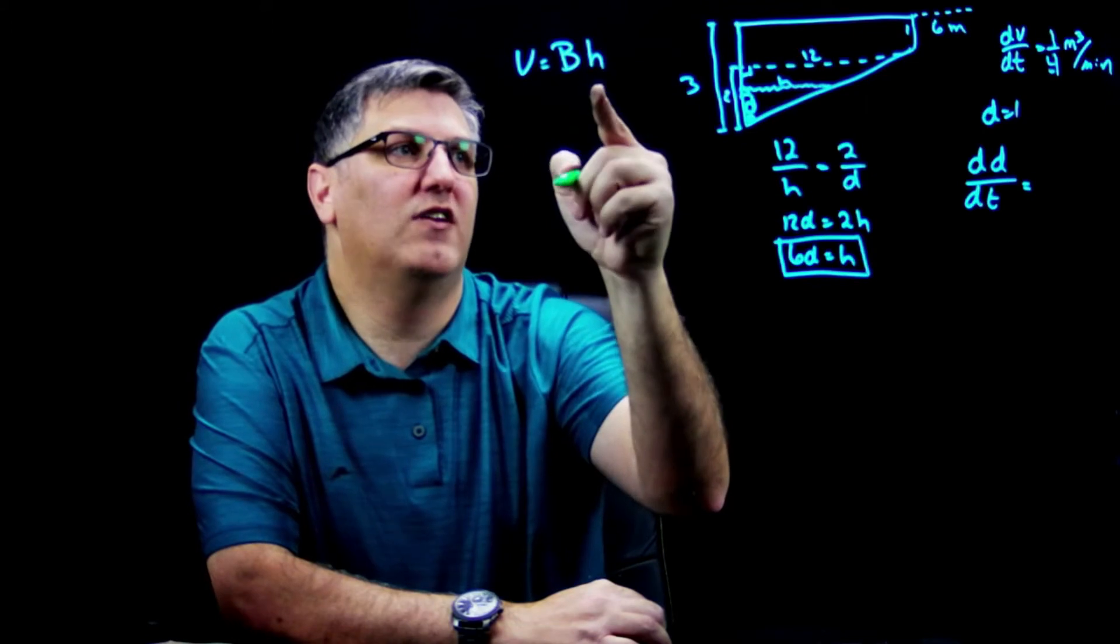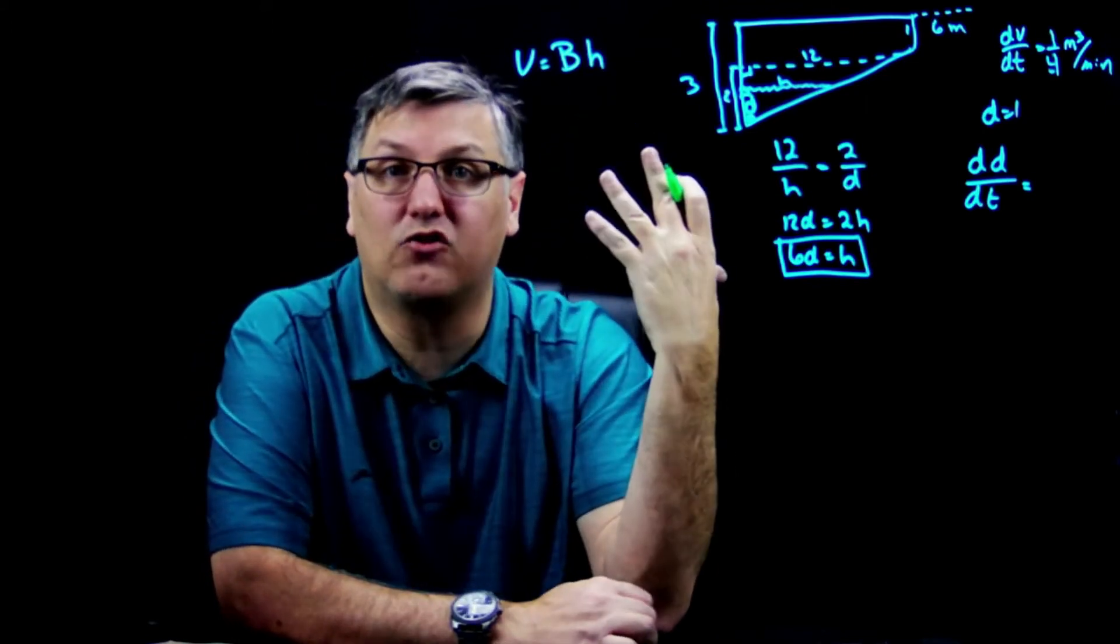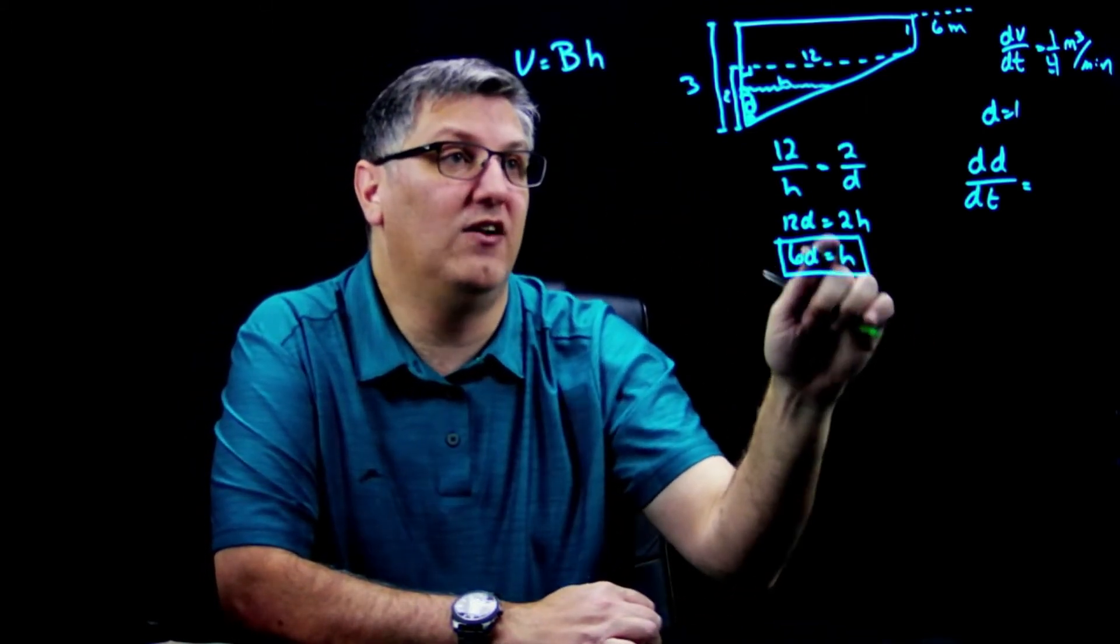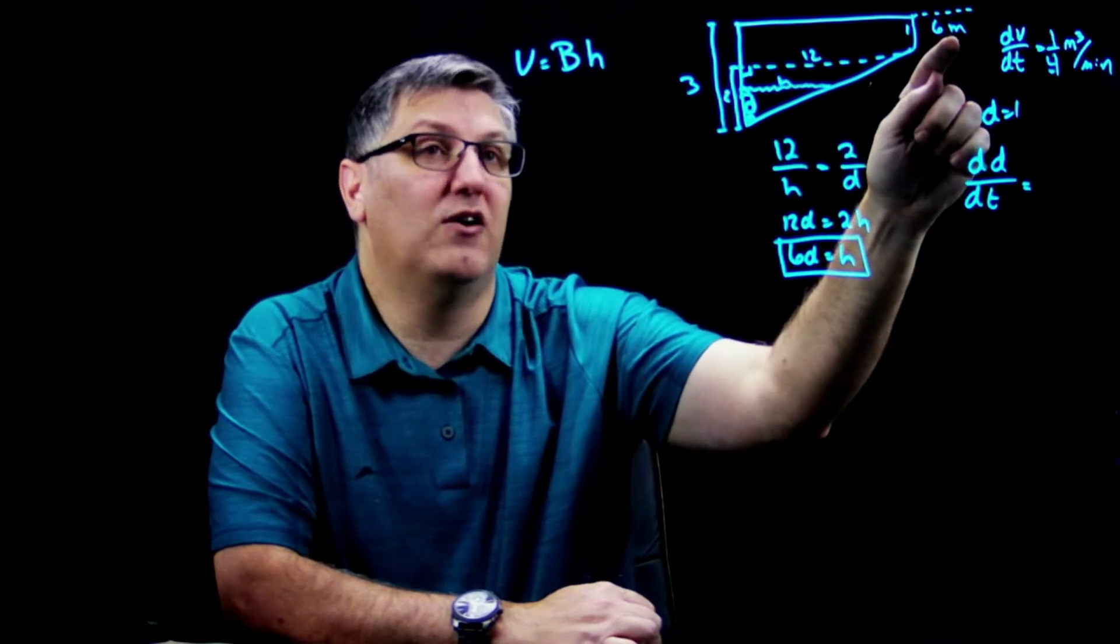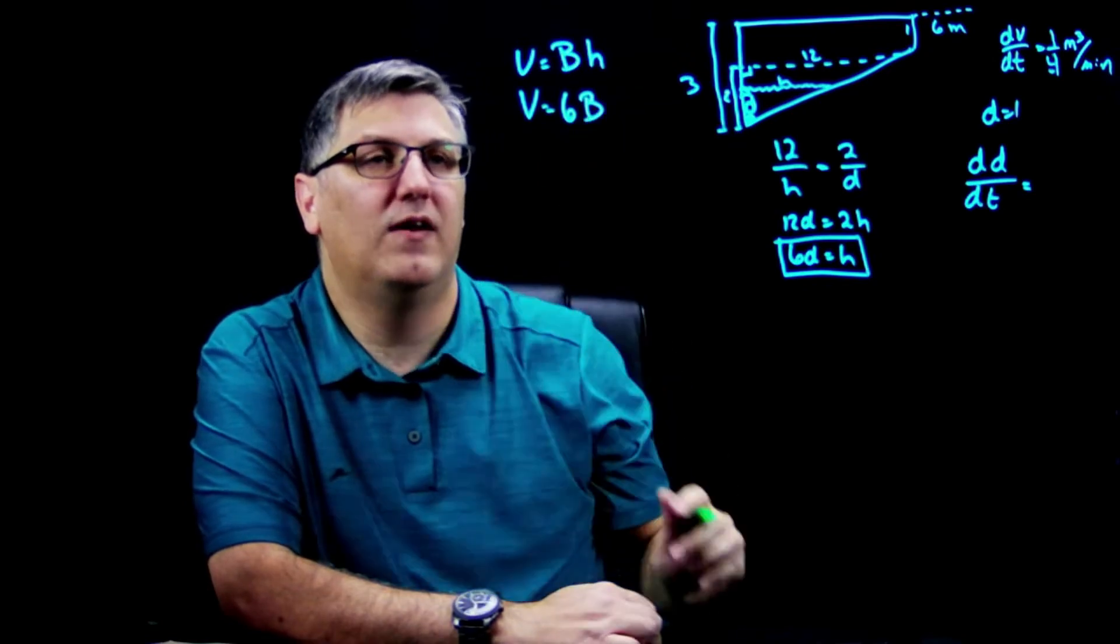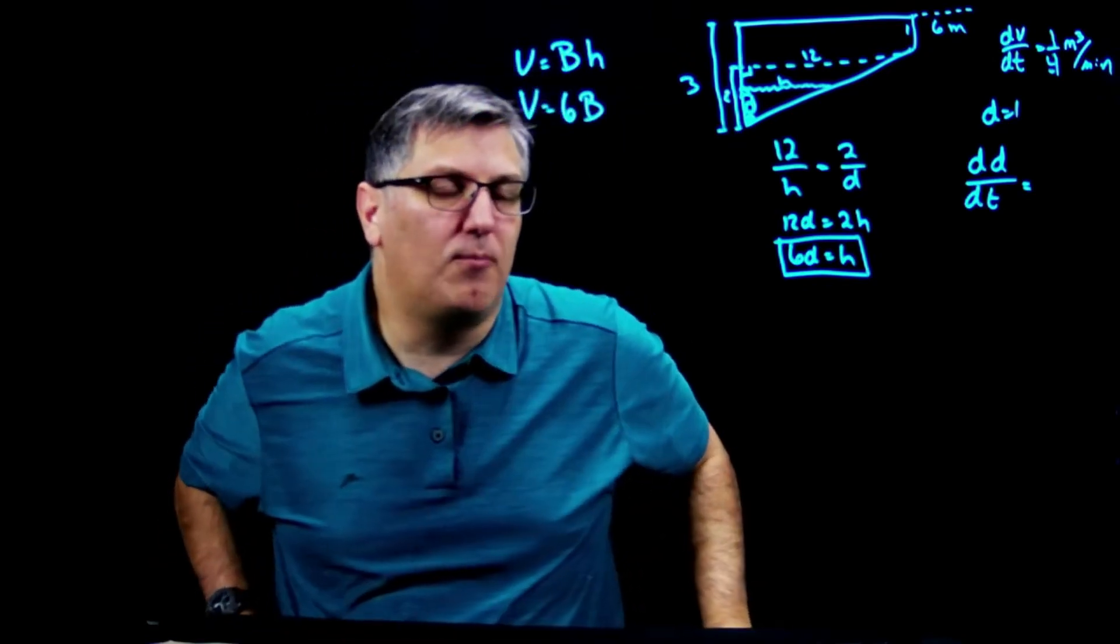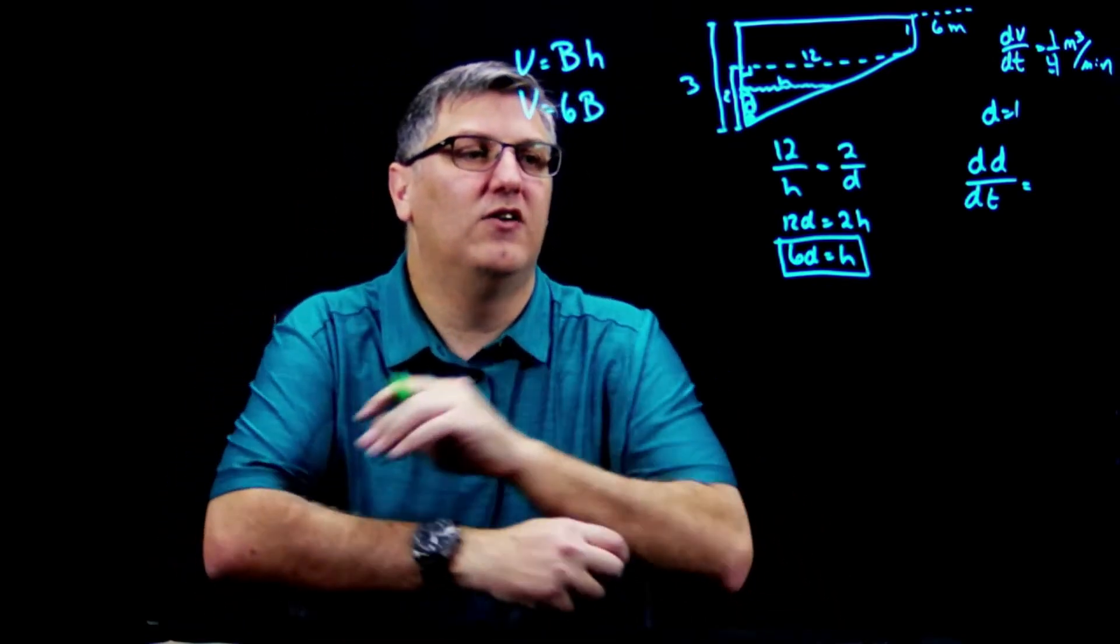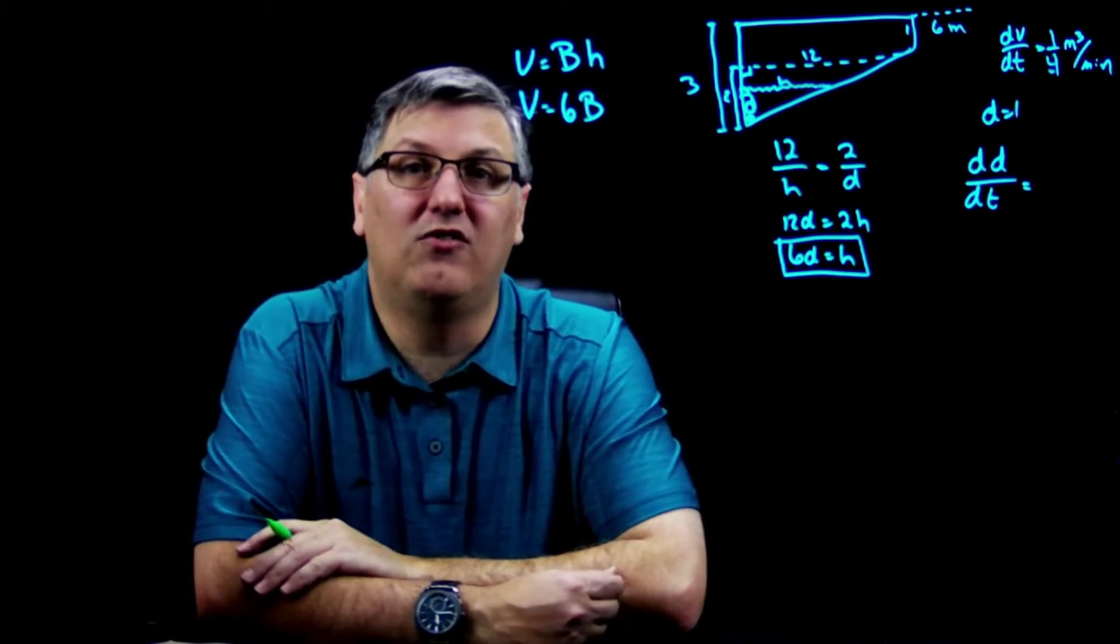So I can rewrite this as V = 6B. I like doing that before I start putting other letters in there, simply because I might end up with two h's that mean two different things. So now that I have a volume, I'm already building my formula. I have V = 6B. Well, B of a triangle - or the area of a triangle - that's going to give me...